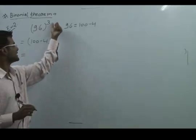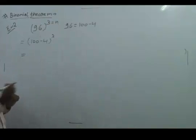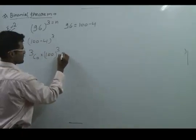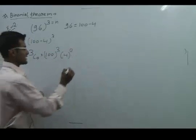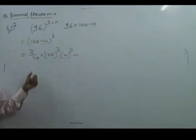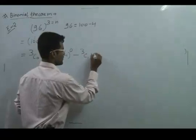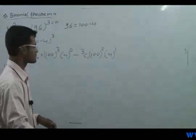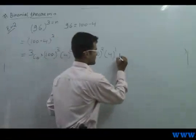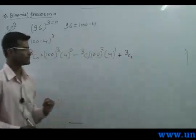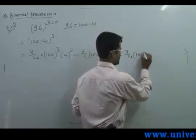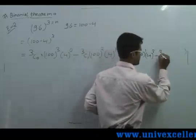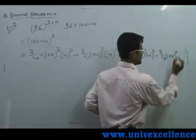It is nC0, where n is 3 here. So it is 3C0 into 100 raised to power 3, into 4 raised to power 0. The next sign will be minus because of (a minus b), so it is minus 3C1 into 100 squared into 4 raised to power 1. The next will be plus sign: plus 3C2 into 100 raised to power 1 and 4 raised to power 2. Then minus 3C3 into 100 raised to power 0 and 4 cube.